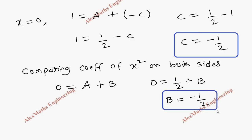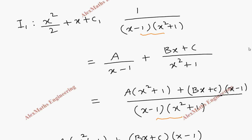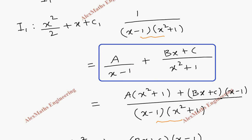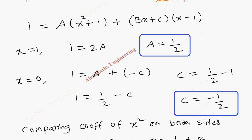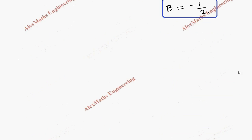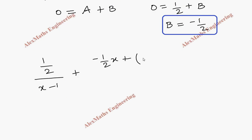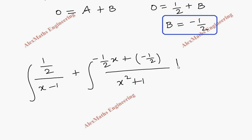We now have all three values and substitute them back: A over x minus 1 becomes one half over x minus 1, plus Bx plus C over x squared plus 1, where B is minus one half and C is minus one half, all divided by x squared plus 1. Now we are going to divide this into two integrals.